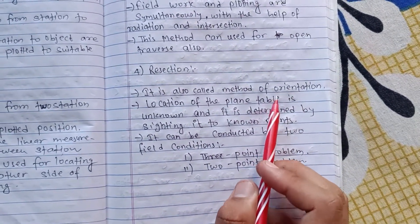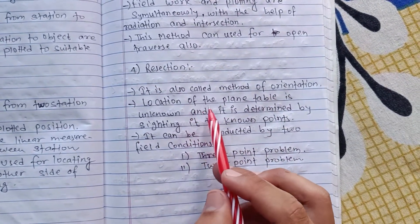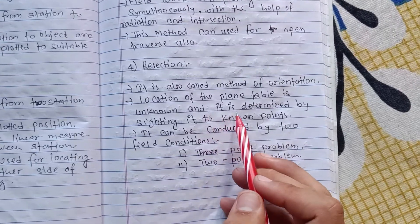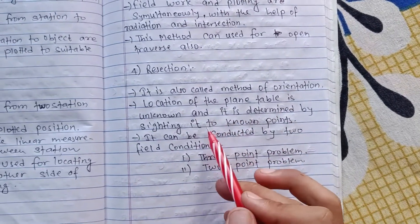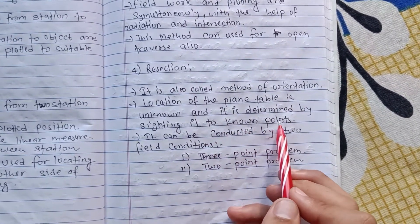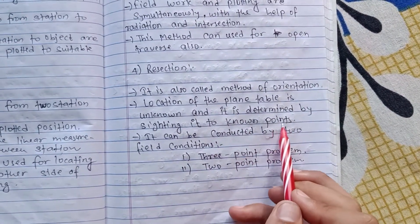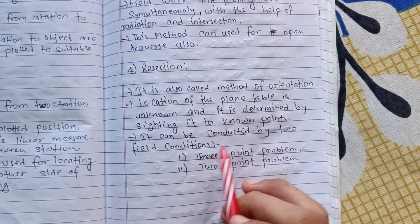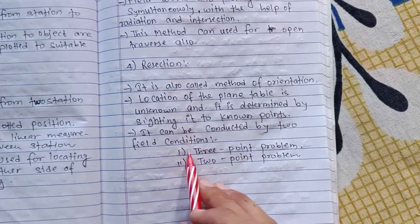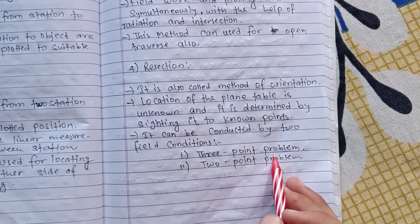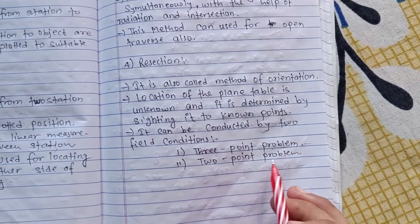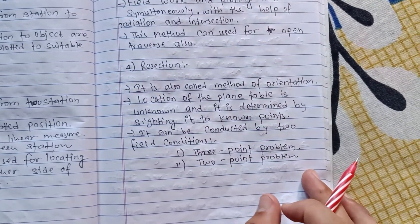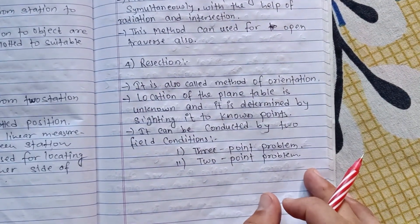Resection is also called the method of orientation. The location of the plane table is unknown and is determined by sighting to known points. It can be conducted under two field conditions: the three-point problem and the two-point problem.